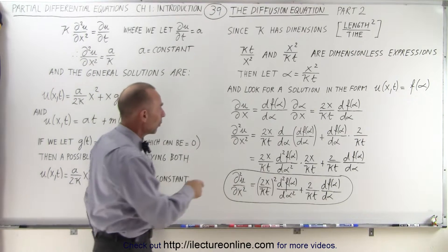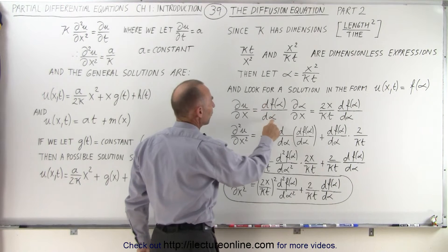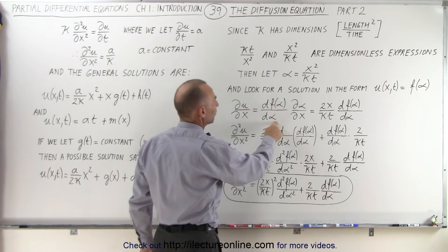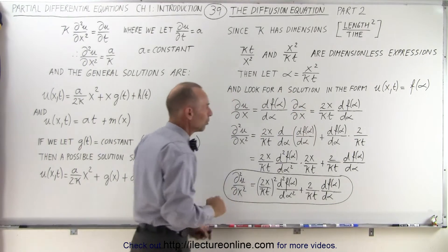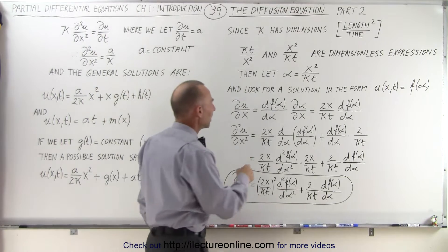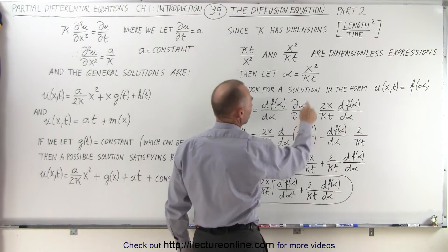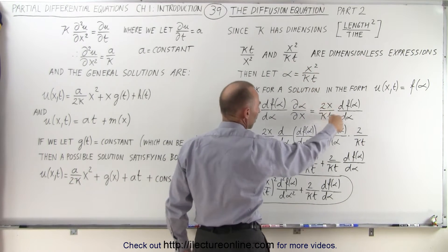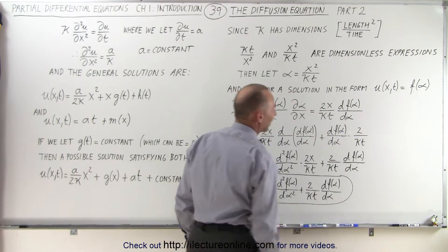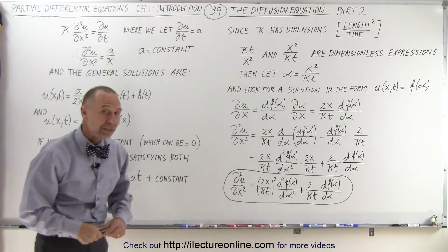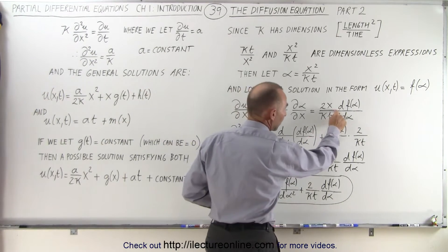We write the partial of u with respect to x, which can be written in terms of the derivative of the function of alpha with respect to alpha, times the partial derivative of alpha with respect to x — that's the chain rule. The partial derivative of alpha with respect to x can then be written as 2x over kt, times the derivative of the function of alpha with respect to alpha. Then we take the second derivative, and now we need to use the product rule because we have a product.